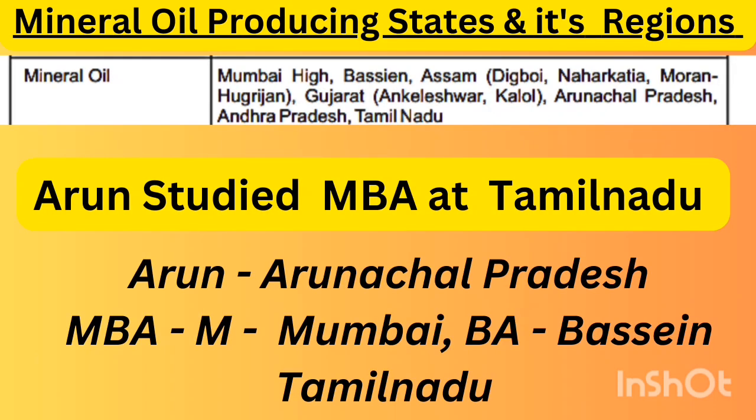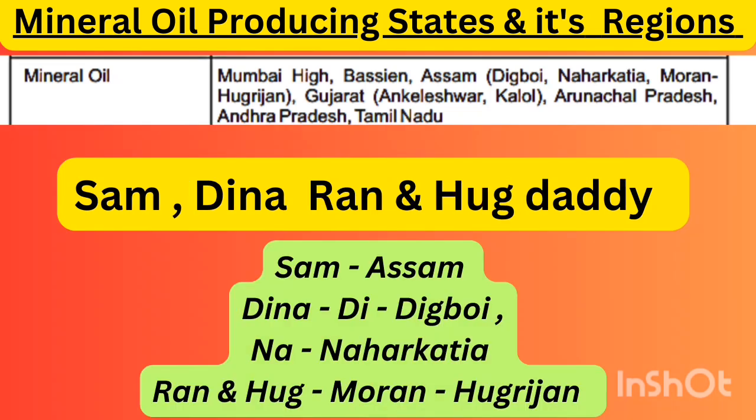The next shortcut is for mineral oil producing states and its regions. The shortcut is: 'Arun studies MBA at Tamil Nadu.' Arun stands for Arunachal Pradesh. In 'MBA' — M stands for Mumbai, BA stands for Basin. Tamil Nadu represents Tamil Nadu.